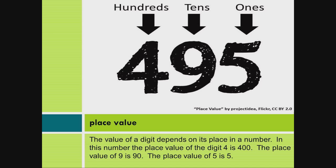Place value. The value of a digit depends on its place in a number. In this number, the place value of the digit 4 is 400. The place value of 9 is 90. The place value of 5 is 5.